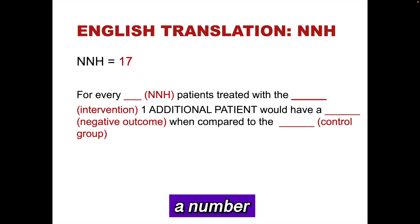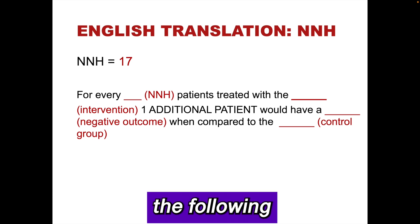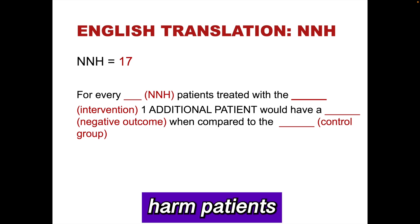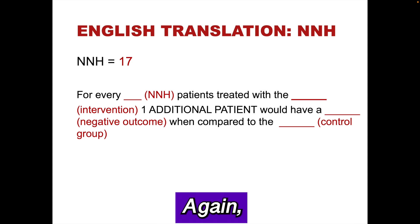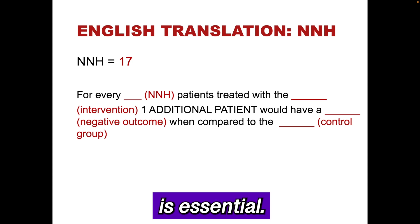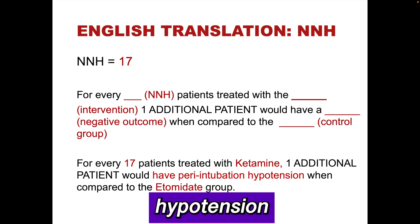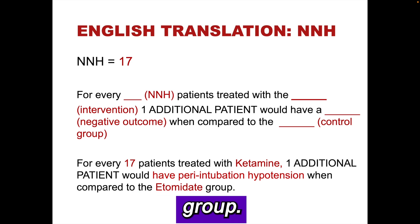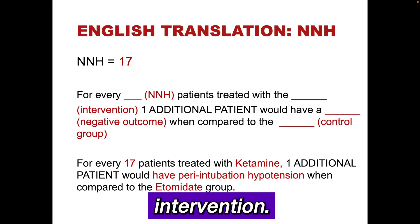We just calculated a number needed to harm of 17. Again, it is important to express this in plain English using the study parameters. We will use the following template: for every [NNH] patients treated with the intervention, one additional patient would have a harm outcome compared to the control group. The phrase 'additional patient' is essential. This becomes: for every 17 patients treated with ketamine, one additional patient would have peri-intubation hypotension compared to the etomidate group. The lower the number needed to harm, the more patients will be harmed from the intervention.